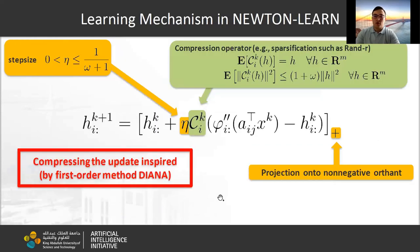The learning scheme for each case is inspired by Diana method. We perform Diana-like step and then project onto positive orthant. Here we use unbiased compression operator. The simplest examples of such compression operator is random sparsification. As you can see, learning step size η depends only on the compression.